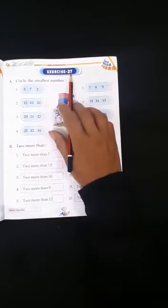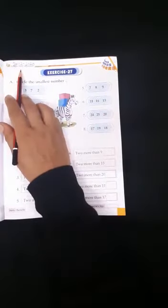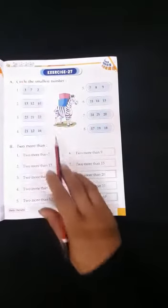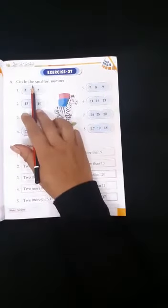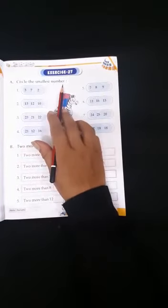Exercise 27. First, we have to mention the date on the top. Let us begin with the first exercise. A. Circle the smallest number.